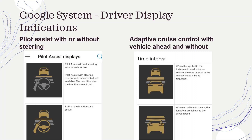The indications for the system being active are in the driver display at the center at the bottom. On the Pilot Assist system, it will show that it is initiated by displaying an active steering wheel. If Pilot Assist with steering is active, it will be a highlighted steering wheel; if it isn't, it will be a gray steering wheel. Each line shown indicates the number of car lengths selected. On the right-hand side, the adaptive cruise control display shows no steering wheel — simply a vehicle, and if there is a vehicle ahead, it shows another vehicle ahead along with the number of car lengths selected.